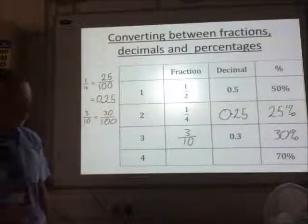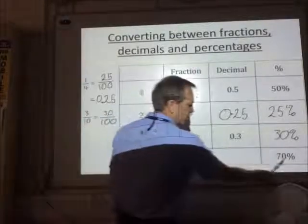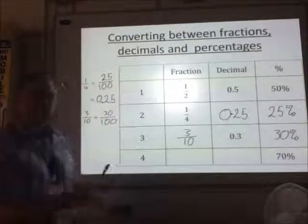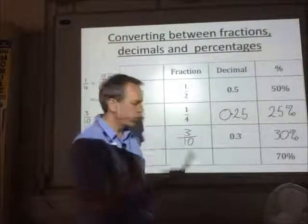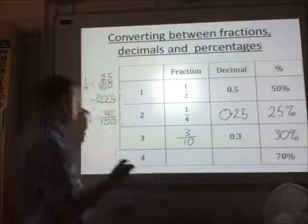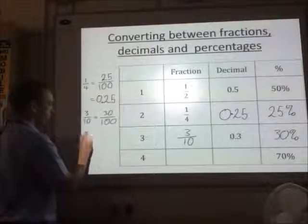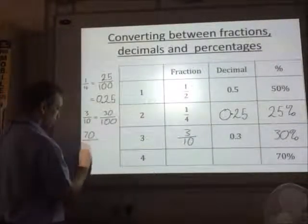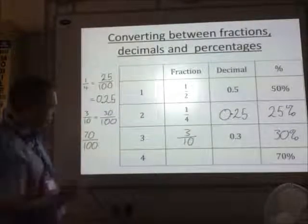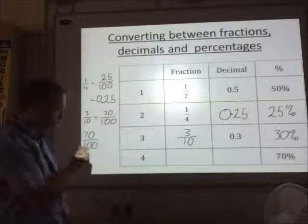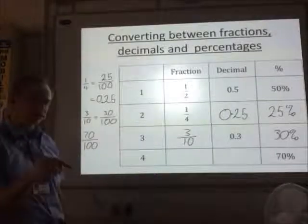Now looking at the final row, this time we're going to start with a percentage. So to convert that into a fraction, percent is out of 100. So let's write that as a fraction. So I've got 70 out of 100. So that is a fraction, but in that form, it's not in its simplest form. So then we need to simplify it.